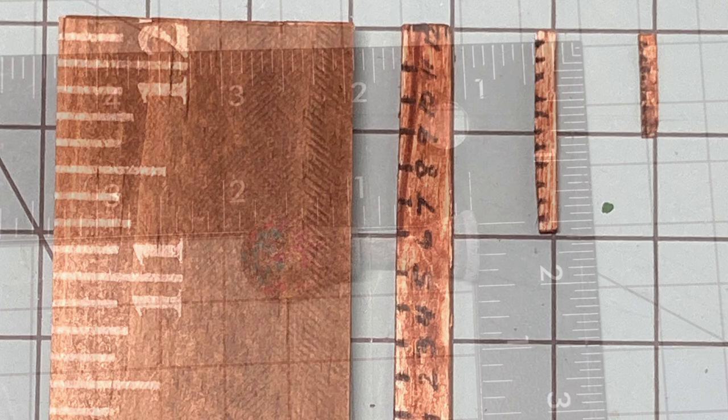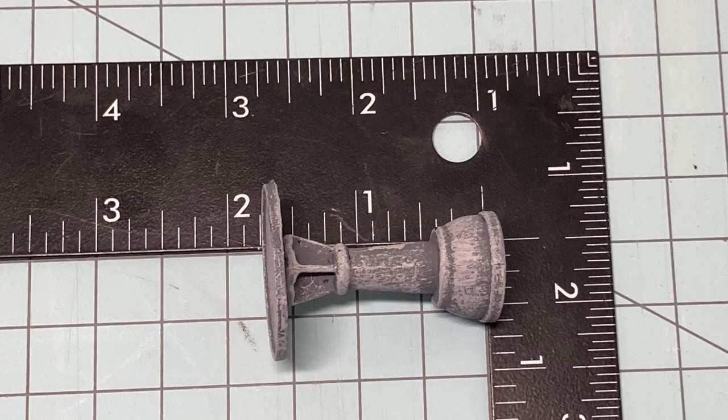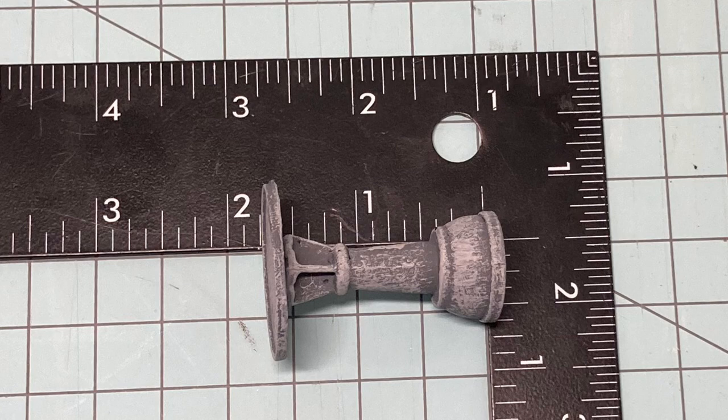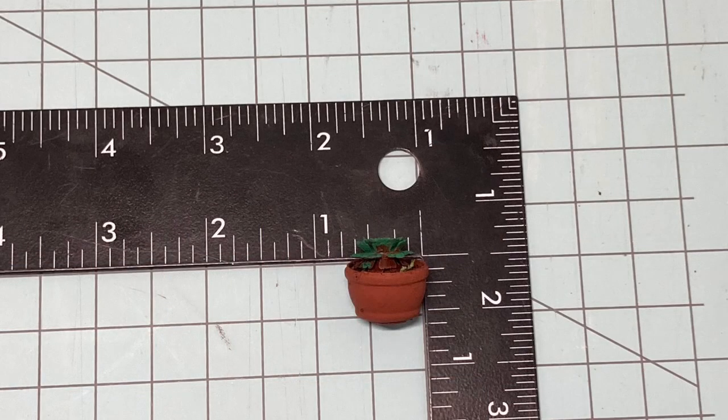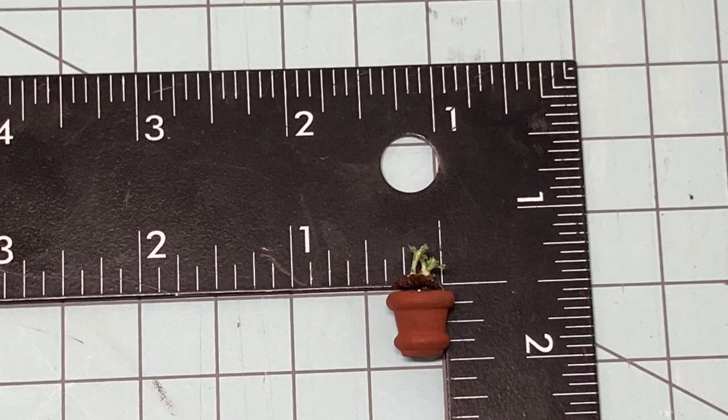Since we are making 1/24th scale accessories today, our 1 and 3/4 inch garden gazing globe and bird bath would each be 3.5 feet tall in real life, because 1.5 inches is three feet and a quarter inch is half a foot. Also, our larger 3/4 inch wide flower pot would be 18 inches wide in real life, and our smaller 3/8 inch flower pot would be 9 inches wide.